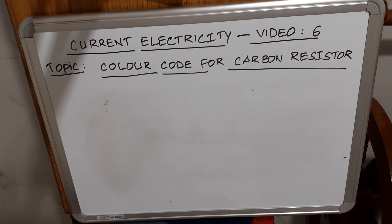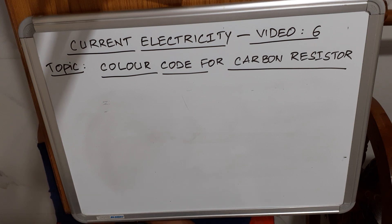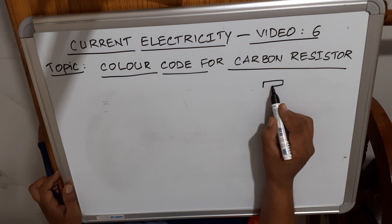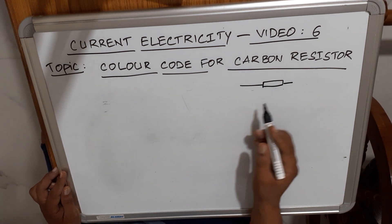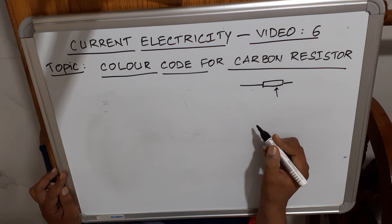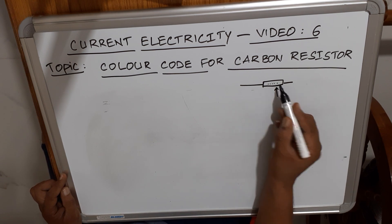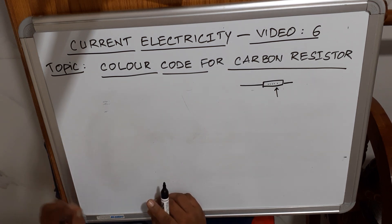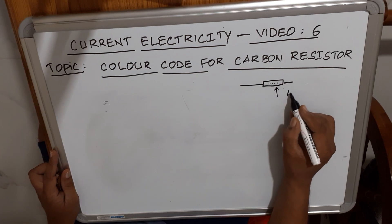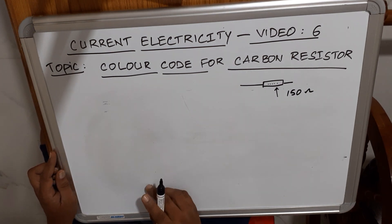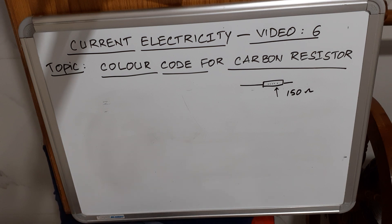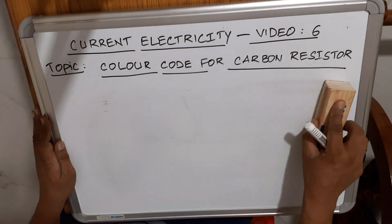In older days, ceramic resistors were used — they occupied more space and had less thermal stability. In modern technology, carbon resistors are used. These carbon resistors are very small in size, and it is not possible to print the resistance value on them. For example, a 150 ohm resistor cannot have its value printed due to its small size, so a color code system was designed to find the resistance.